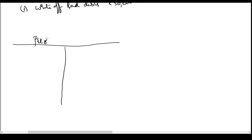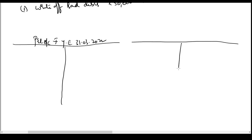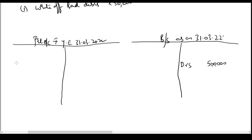Profit and loss account for year ended 31st March 2022. Balance sheet as on 31st March 2022. I will show debtors in the balance sheet asset side inner column — 5 lakh. Discount allowed will be debited to the P&L account — 10,000 rupees.